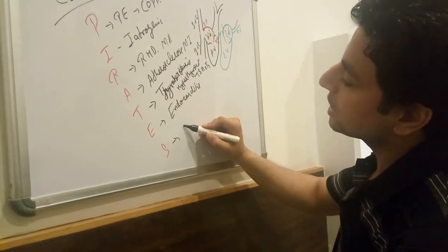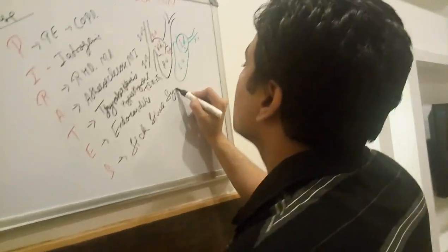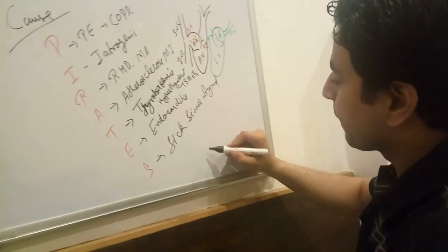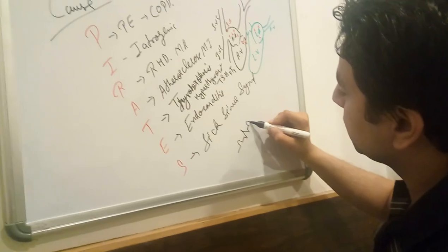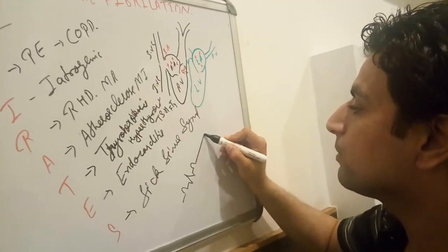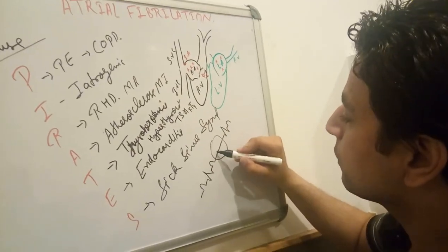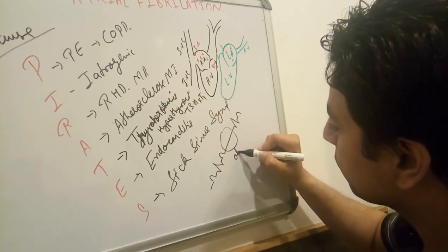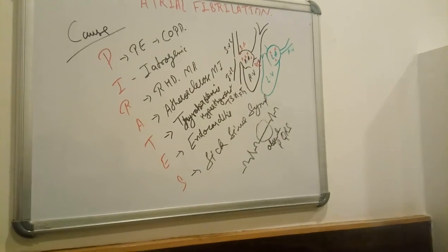S represents sick sinus syndrome. In this condition, the ECG shows a P wave, QRS complex, T wave — then a long pause with no P wave and no QRS complex — then a QRS, then T wave. This long pause with absent P and QRS is known as sick sinus syndrome, which can also sometimes cause atrial fibrillation.